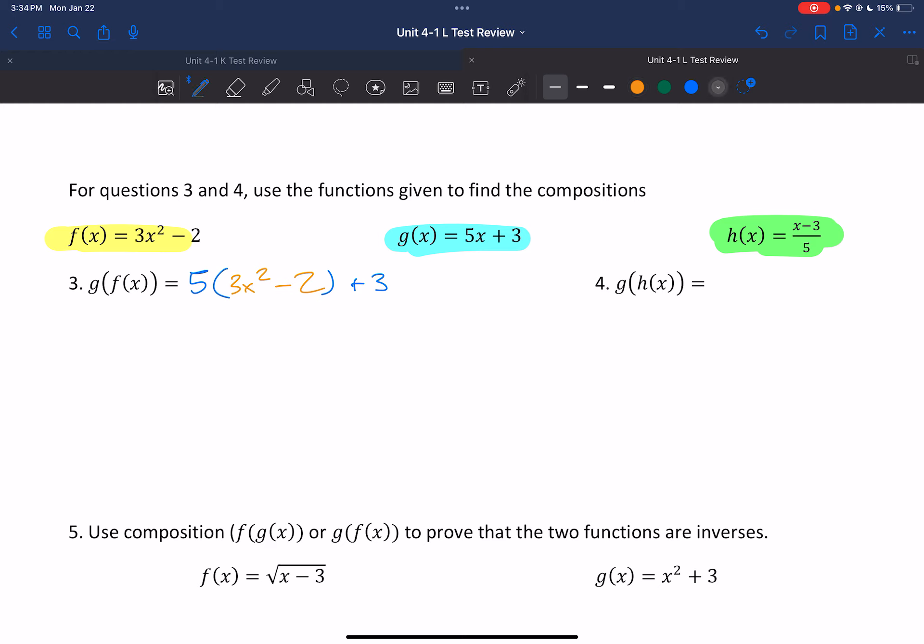So what we'll do from here is let's distribute that 5. 5 times 3, 5 times 2. So we'd have 15x squared minus 10 and still have that plus 3 on the end. We can also combine the minus 10 and the plus 3 into minus 7. So 15x squared minus 7. Seems like a good answer here. That's as simple as we can make it.